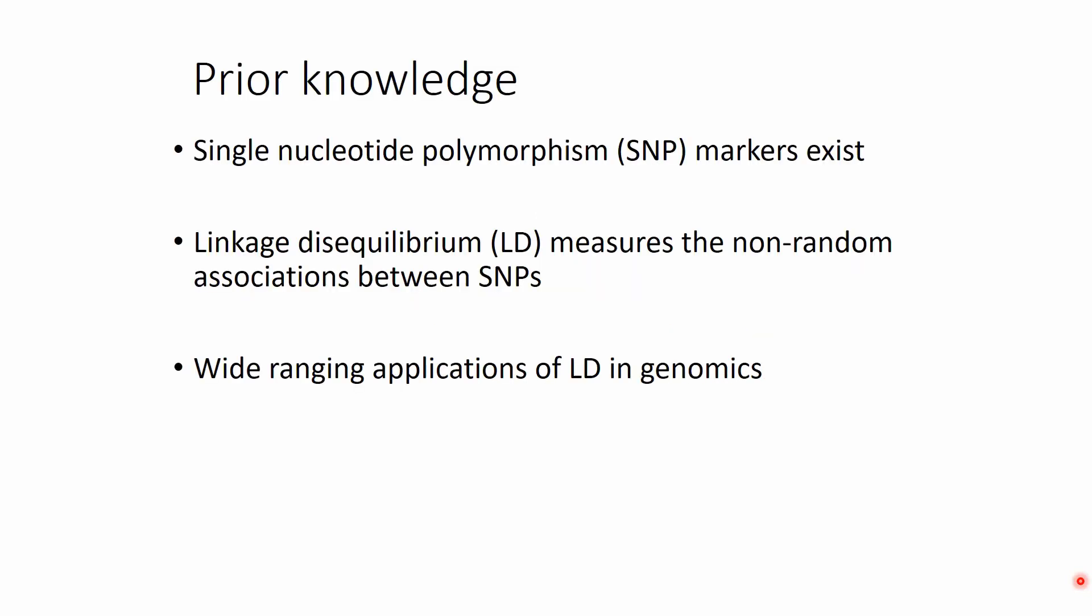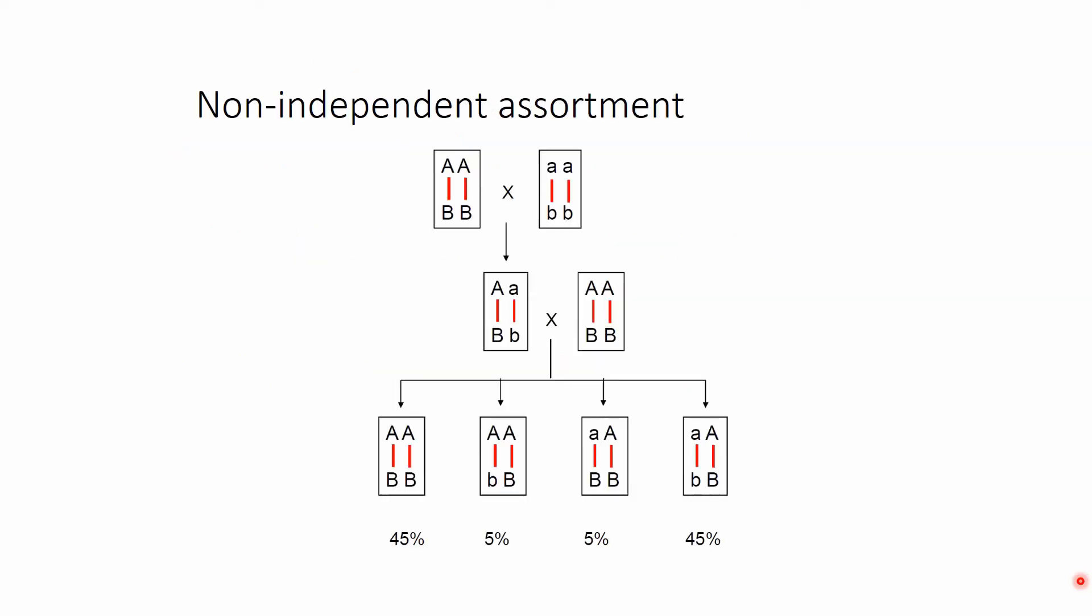Let's start with a little bit of activation of our prior knowledge, namely that single nucleotide polymorphisms or SNPs exist and these are the main marker types we speak about on this channel. Linkage disequilibrium as such also exists, and we spoke about this in the previous video. In short, it actually measures the non-random associations between SNPs, and there is wide-ranging applications for LD in genomics. But for today's question: how to measure linkage disequilibrium? We saw this graph in the previous video, and basically what we see is that some of the allele combinations are appearing much more frequently than others, thus leaving two linkage disequilibrium.